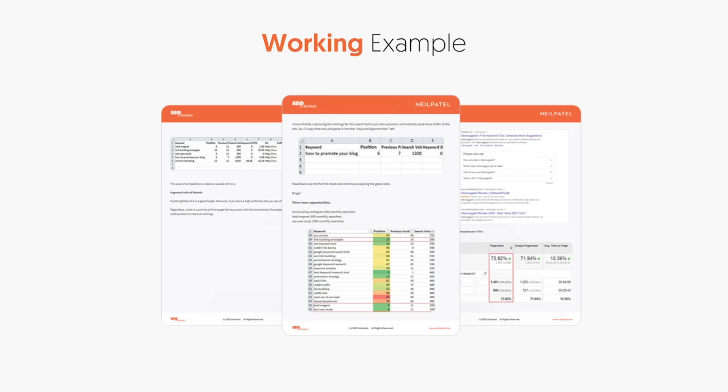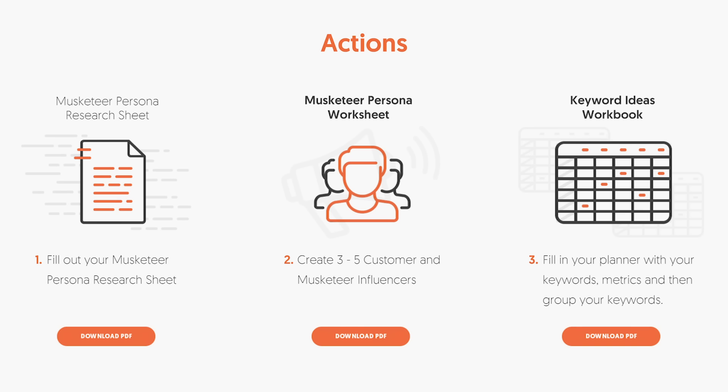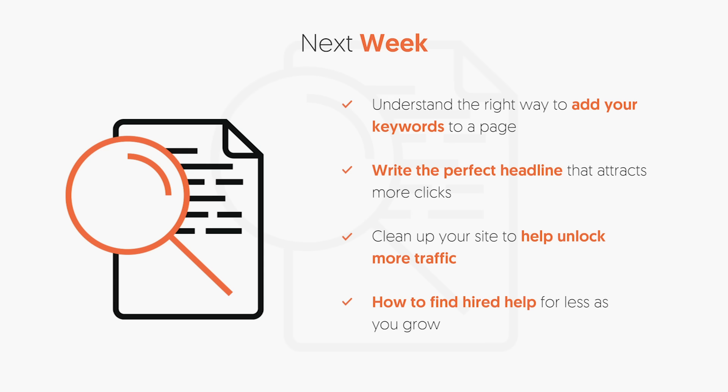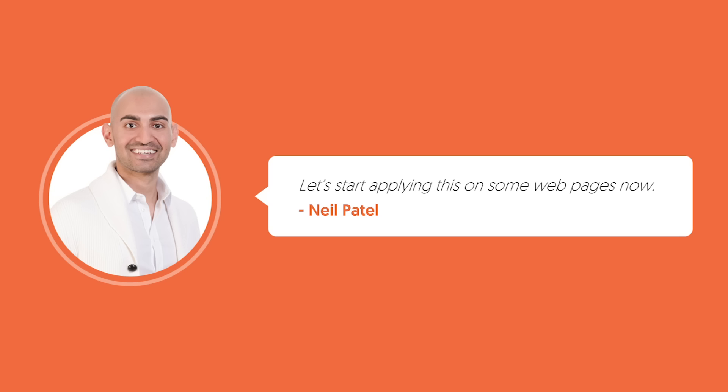Go to neilpatel.com/training and download the working example of doing keyword research. It breaks down how to do it and how to fill out your sheet step by step, so you have a working example and you're not lost. Action items: make sure you download the Musketeer Persona Research Sheet, look at the Musketeer Persona Worksheet, and of course the Keyword Ideas Workbook. Next week, I'm going to be breaking down how to add the right keywords to your page, how to write the perfect headline that attracts more clicks — since eight out of ten people read a headline but only two out of ten click through — how to clean up your site and unlock more traffic, and how to find hired help for less. I look forward to helping you get loved by Google — I'll see you next week.